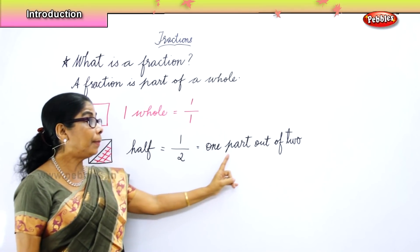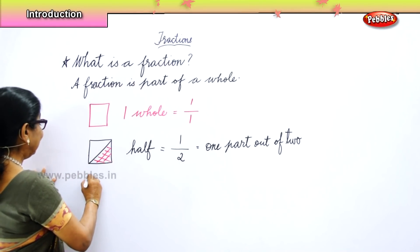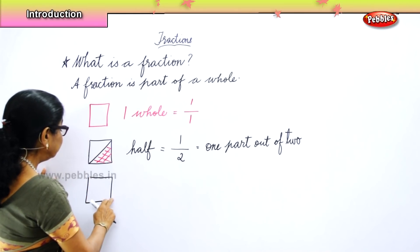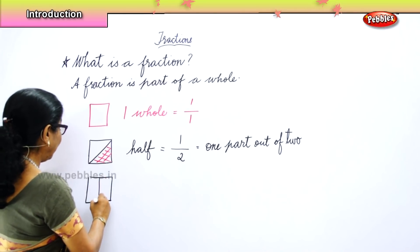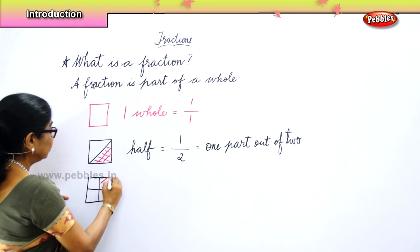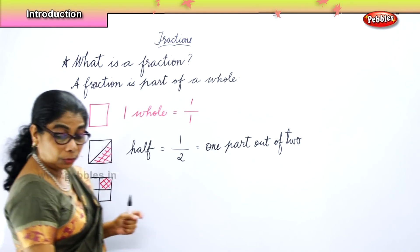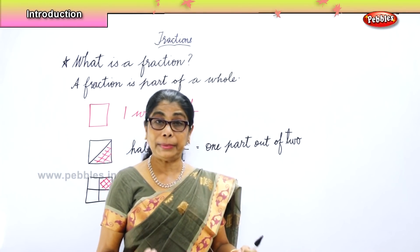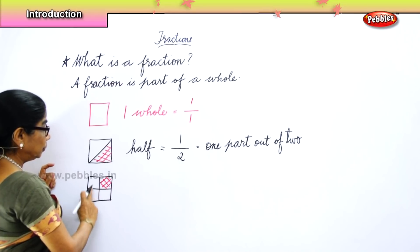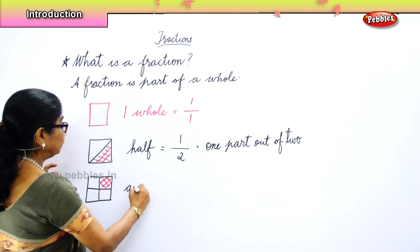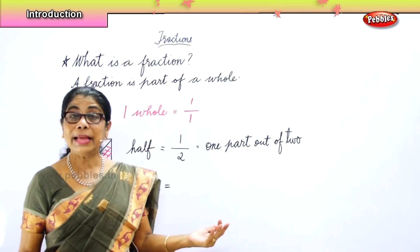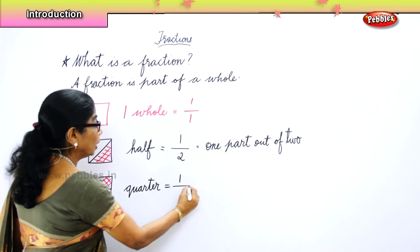Now the same cake — let's divide it into four parts. I am going to shade only one part. The shaded part — you say quarter. One, two, three, four — you say quarter. And how do we represent it in fraction? One part out of four — one by four.